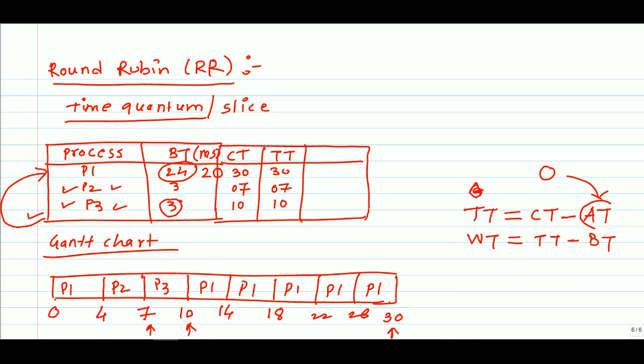And what is waiting time? It is nothing but turnaround time minus burst time. So 30 minus 24 is 6, 7 minus 3 is 4, and 10 minus 3 is 7. So this is waiting time.